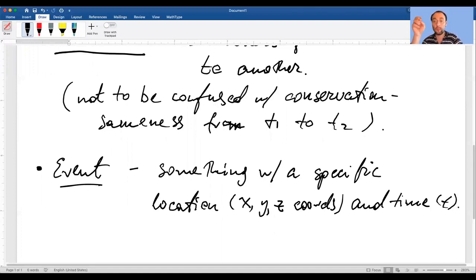I always like to give an example of a firecracker exploding. It goes off at some specific location out here in space at some specific time. It's an event. In everyday language we think of things like a football game as an event. In physics lingo, it's not an event because that's actually a whole continuum, a series of events from 6 pm to 8 pm.